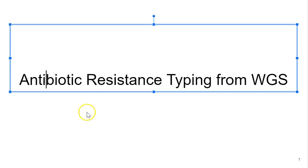Dr. Lauren Launin, and I'm going to talk to you a little bit about antibiotic resistance gene typing from whole genome sequences. More specifically, I'm going to introduce you to the idea of what antibiotics are and what antibiotic resistance is, and I'm going to close by describing briefly one method by which you can take whole genome sequence data and determine whether an isolate or set of data contains antibiotic resistance genes.